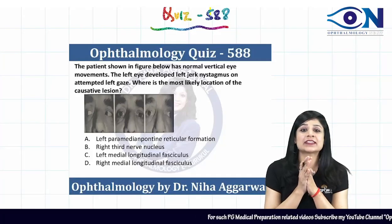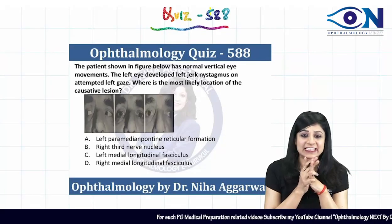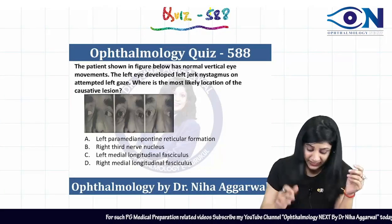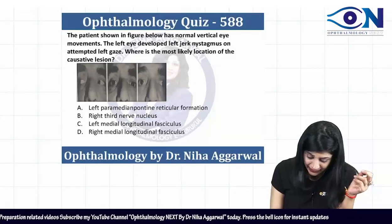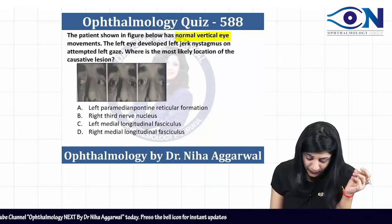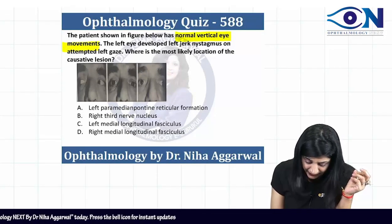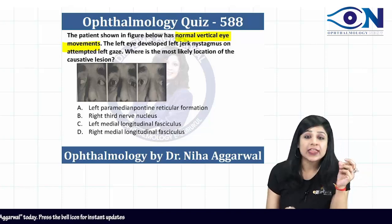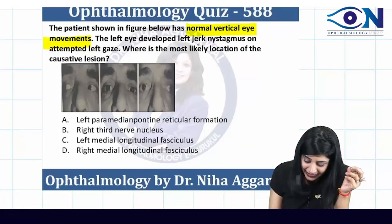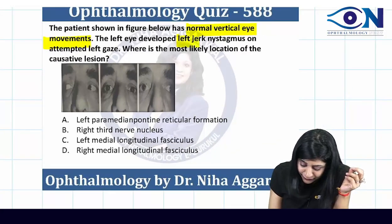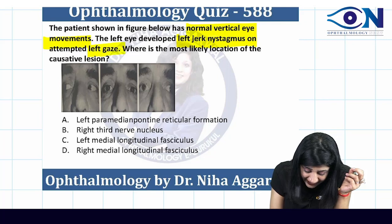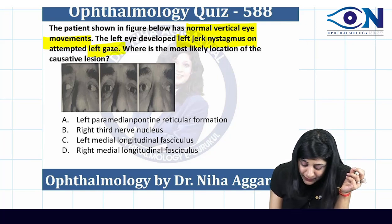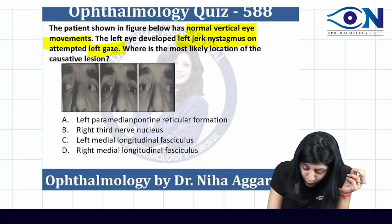Hello guys, welcome to quiz number 588. Here you have a question where the patient is given in the picture and he is showing normal vertical eye movements. They are saying that the left eye has a left jerk nystagmus on left gaze. What is the most likely location of the causative lesion?